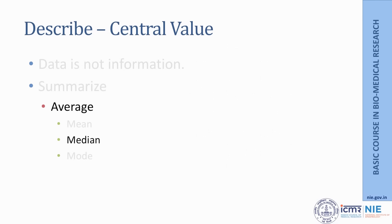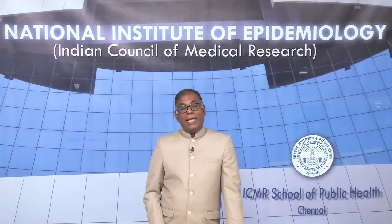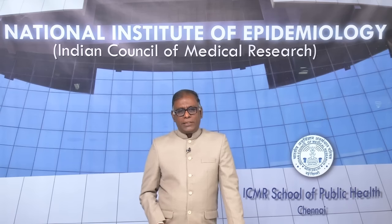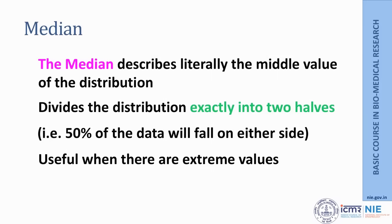One problem with the mean is that extreme values — either very big or very small — can influence it. Because you are adding all values, even one large value can cause the mean to become an overestimation. To avoid this, we have another measure called the median.